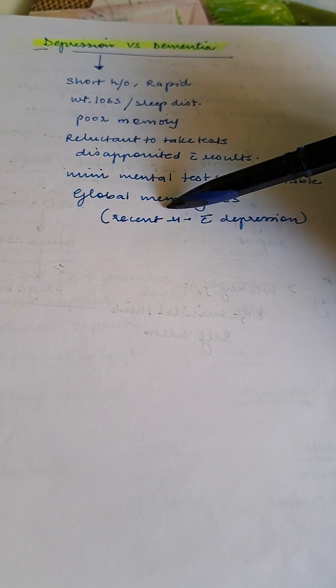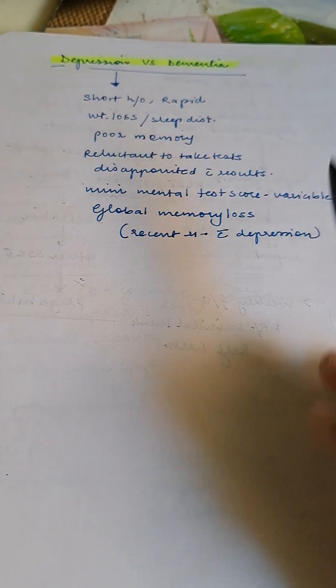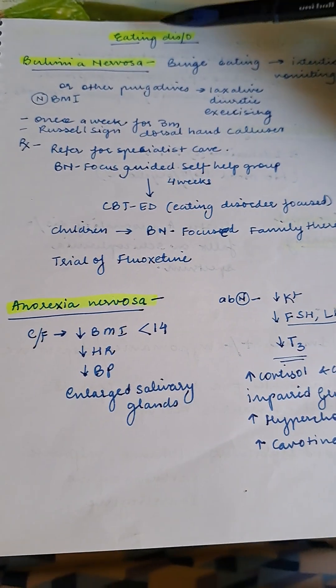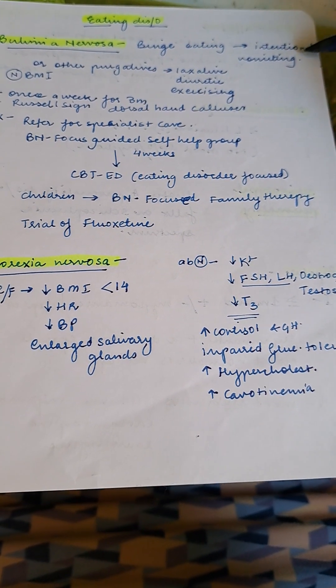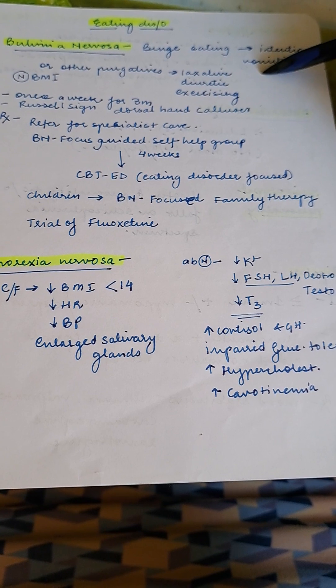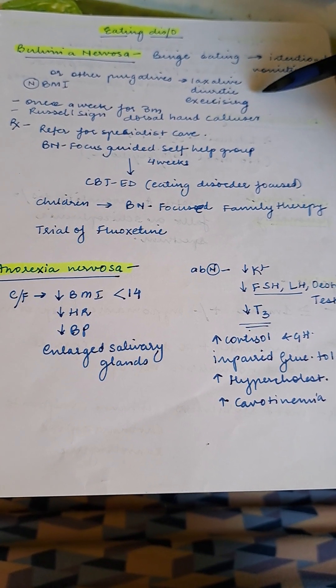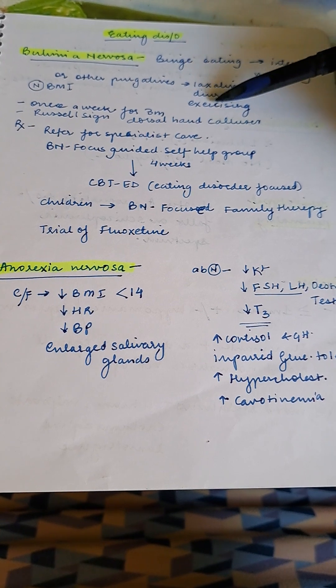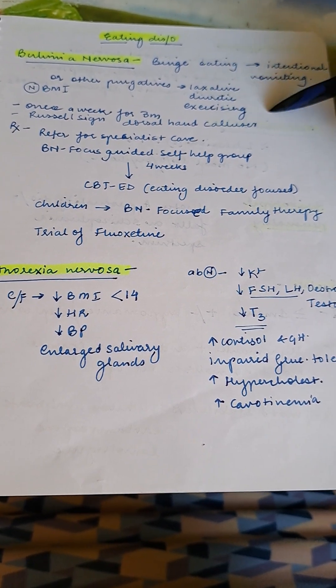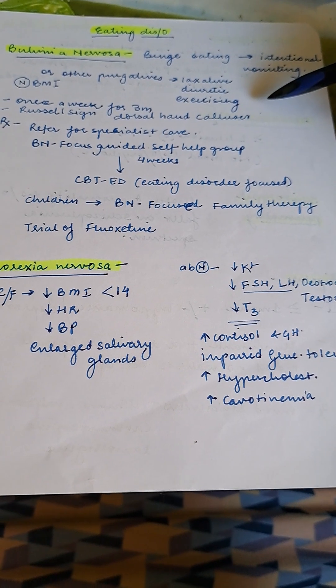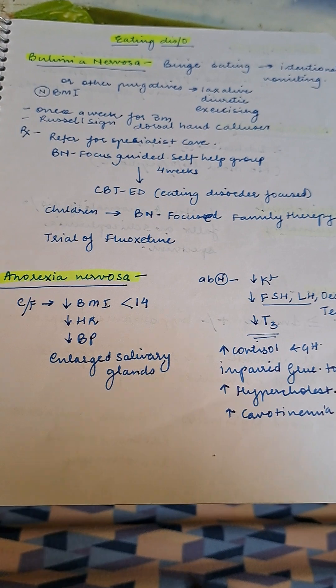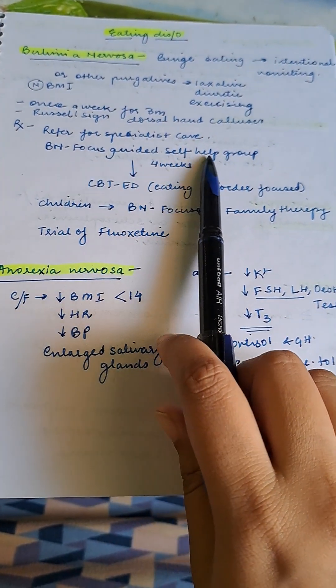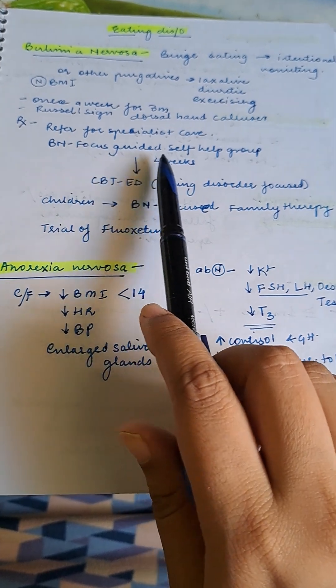Eating disorders. Bulimia nervosa: binge eating and intentional vomiting, or other purgatives like laxatives, diuretics, or excessive exercising. BMI usually normal. Occurs once a week for three months. Russell's sign - dorsal hand calluses from purging the vomit. Treatment: refer for specialist care in all cases of bulimia nervosa.